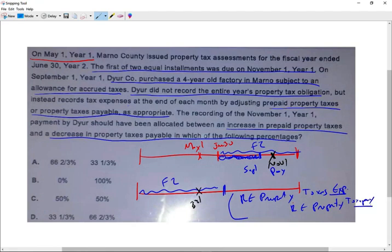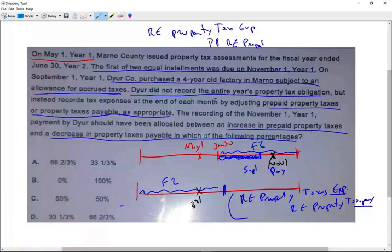Or if they prepaid, what they would do is they will debit real estate property tax expense and they credit prepaid real estate property. So in case they paid upfront, if they have a prepaid, they would record the expense by adjusting the prepaid, or if they don't have a prepaid, they will do so.